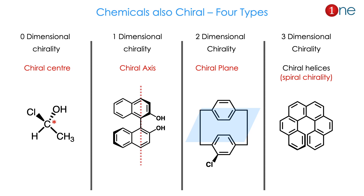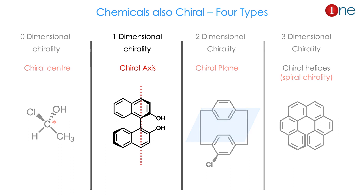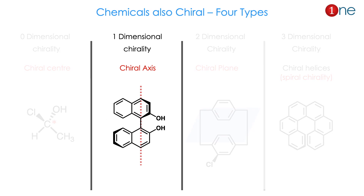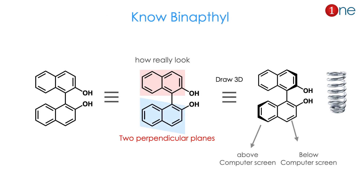Chemical compounds can also be chiral, classified into four types: zero-dimensional, one-dimensional, two-dimensional, and three-dimensional. Zero-dimensional means a chiral center — four different attached atoms on a carbon that create chirality. Chiral axis, which is our today's interest, is a one-dimensional axis that creates chirality, mostly in biphenyl and allene compounds. Two-dimensional chirality means a plane creates chirality, as in ansa compounds and cyclophane compounds. Three-dimensional chirality is created by helicenes, also called helical chirality. But today's interest is one-dimensional chirality, particularly with binaphthyl compounds.